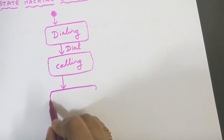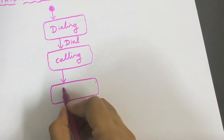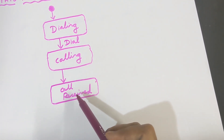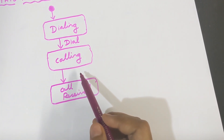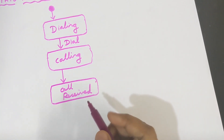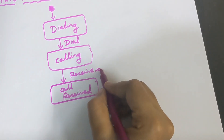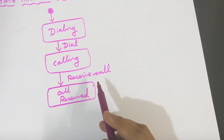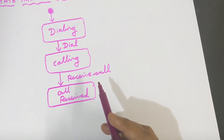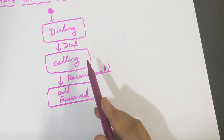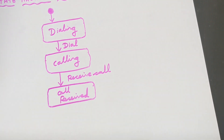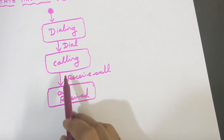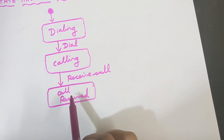The next state to draw is 'call received.' Will the state change from calling to call received directly? No — only when an event happens. The event is 'receive call.' Only when the call is received by the person we are calling will the state change from calling to call received. If they don't receive, the state will not change.